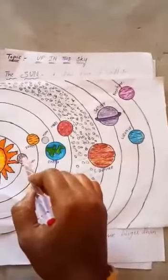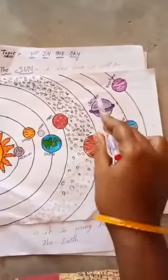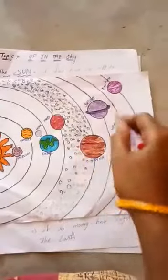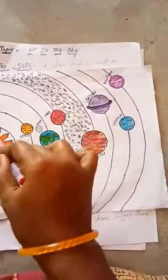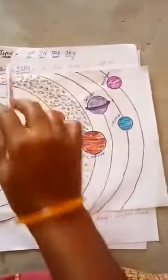The sun and the eight planets are here. The eight planets are Mercury, Venus, Earth, Mars, Jupiter, Saturn, Uranus and Neptune. These are the eight planets. The sun and the eight planets form the solar system.